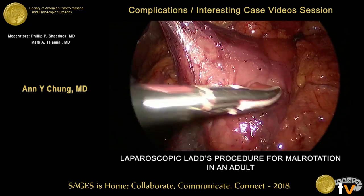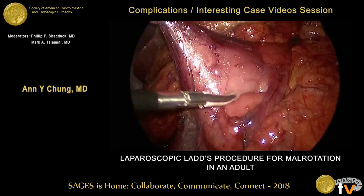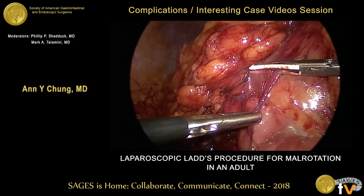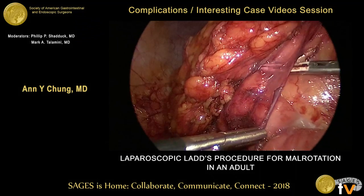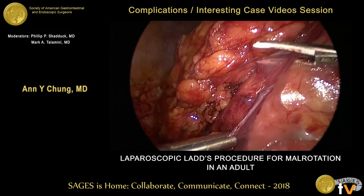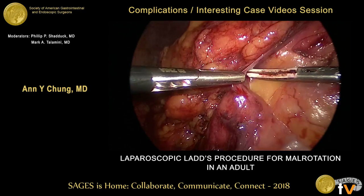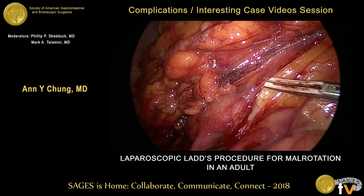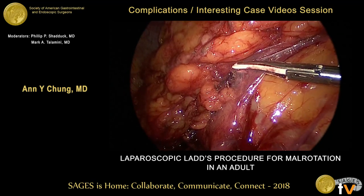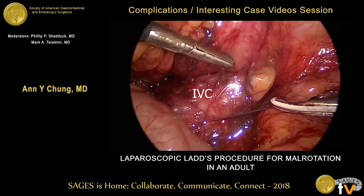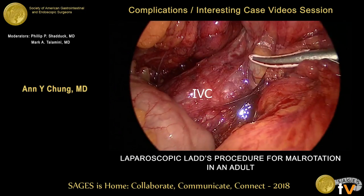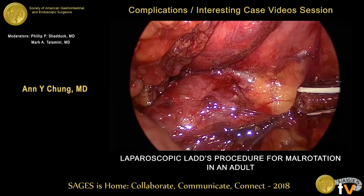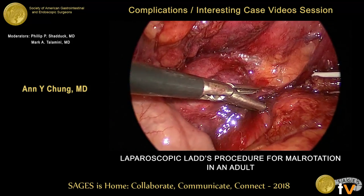These were divided with a combination of blunt and electrocautery dissection. Here again are adhesions to the retroperitoneum, with the duodenum overlying the IVC, and we dissected off these adhesions as well.